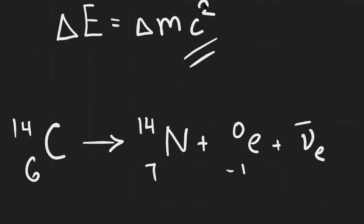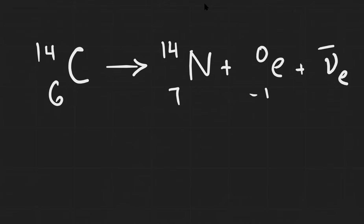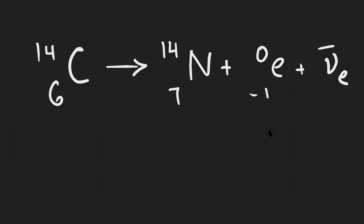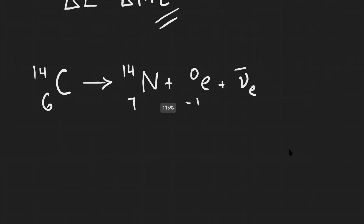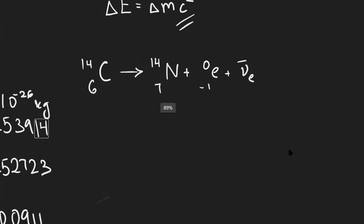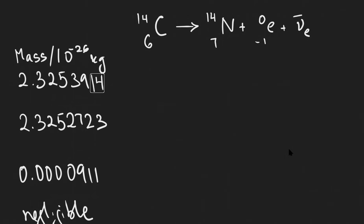Let's apply E equals mc squared to a simple beta decay equation. We have carbon-14, which will decay into nitrogen-14 via beta minus decay, meaning we're going to have a beta minus particle, which is an electron, and then an anti-neutrino. Let's compare the masses before and after this nuclear reaction. The mass of the carbon before is this number here times 10 to the power minus 26, and all the corresponding masses are given here.